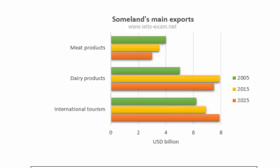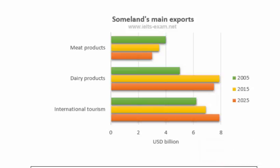When you can summarize what this table is about, you will then be able to write about what you see. A quick synopsis is that this table displays Sumlin's Main Exports. They export meat products, dairy products, and international tourism. I immediately recognize that two of the exports are for consumption and the last one is for tourism. I also notice that the years 2005, 2015, and 2025 are displayed, and the chart talks about the exports in billions of dollars.